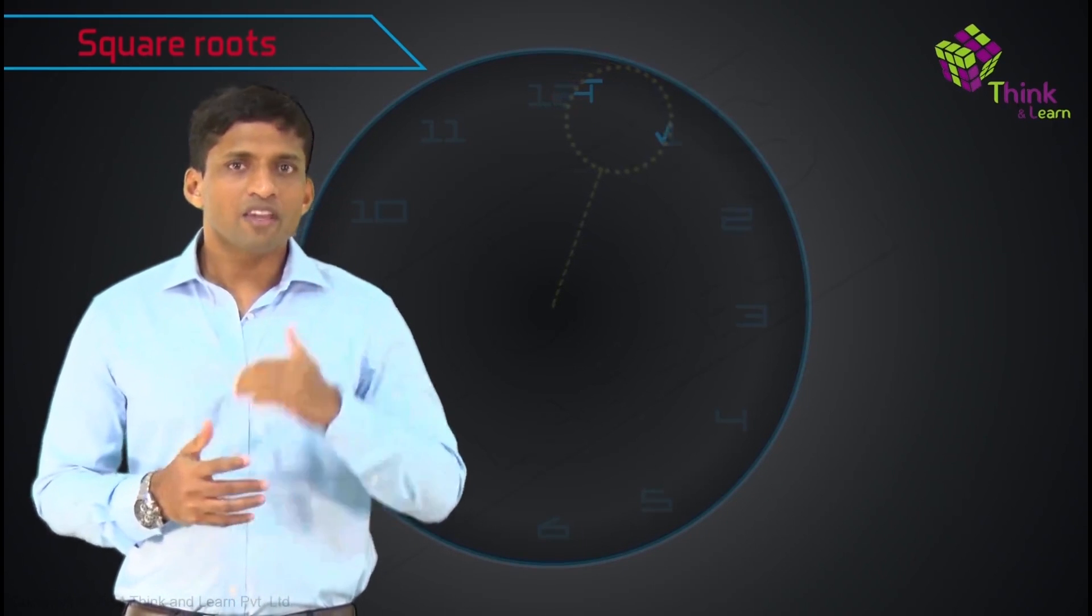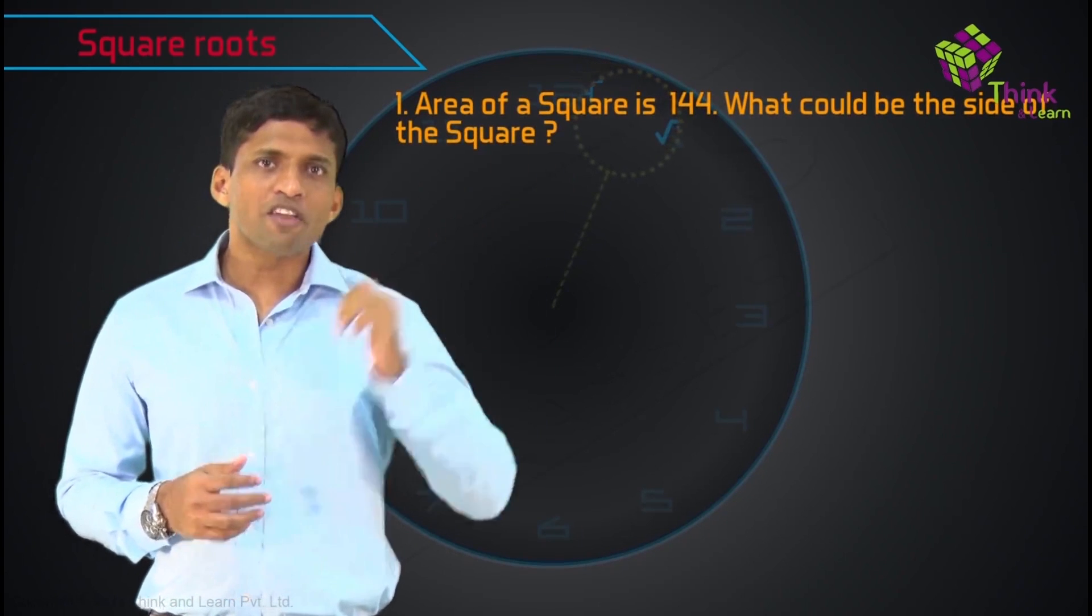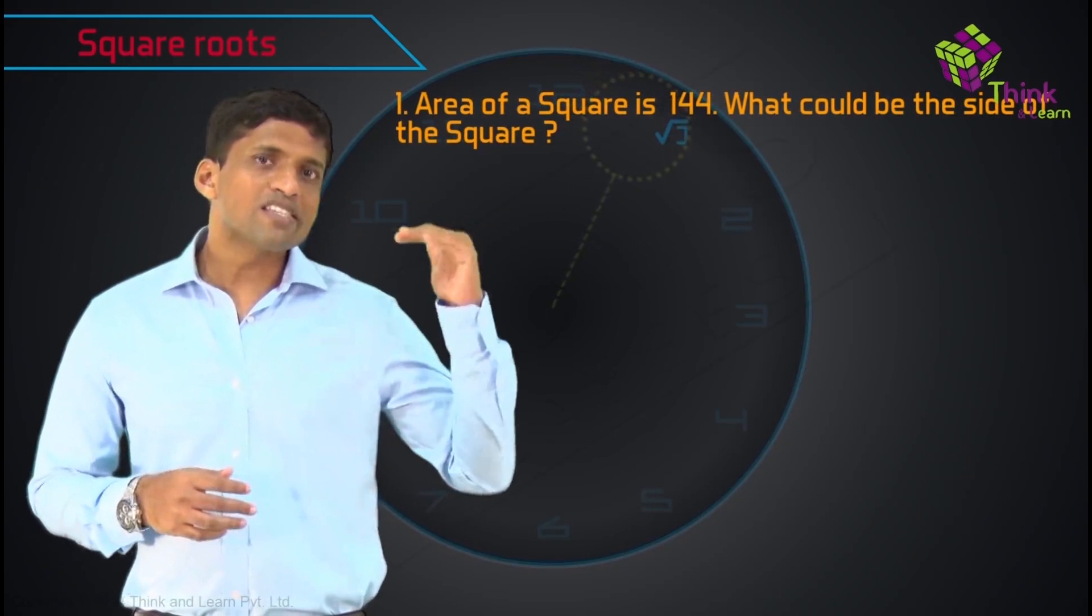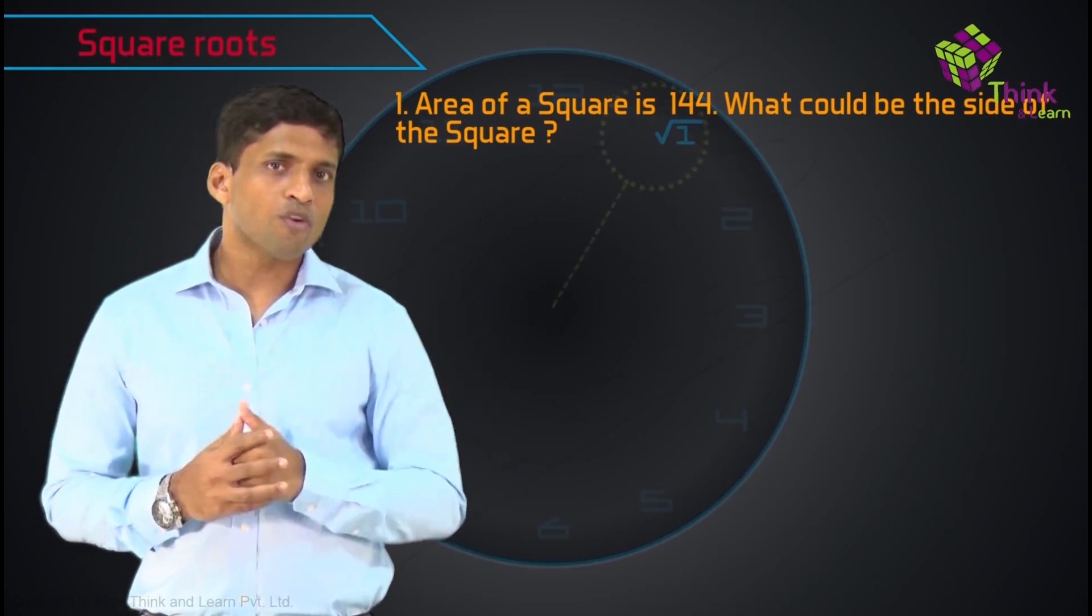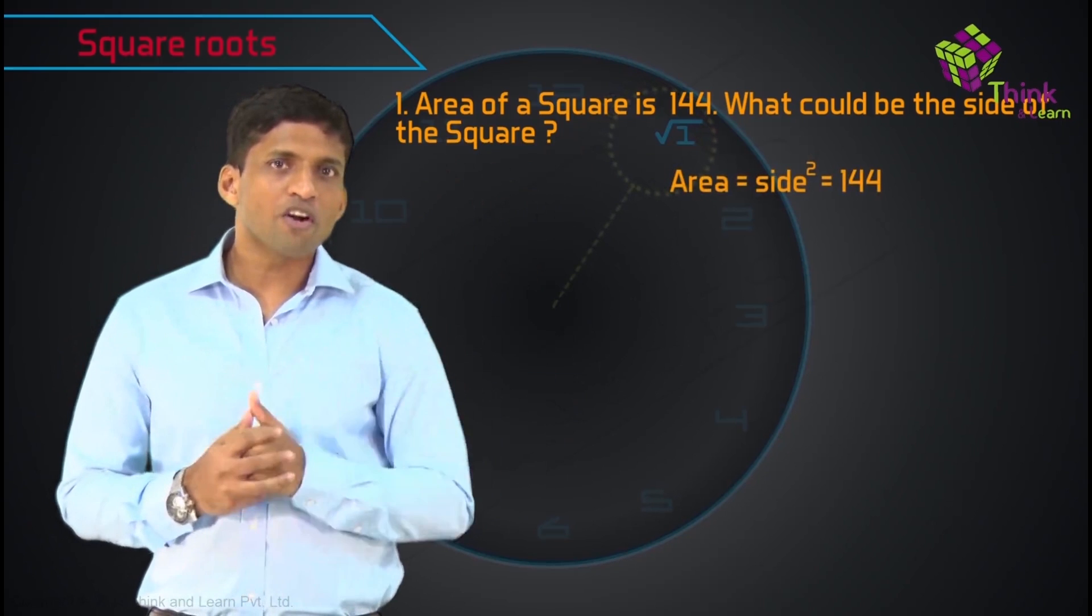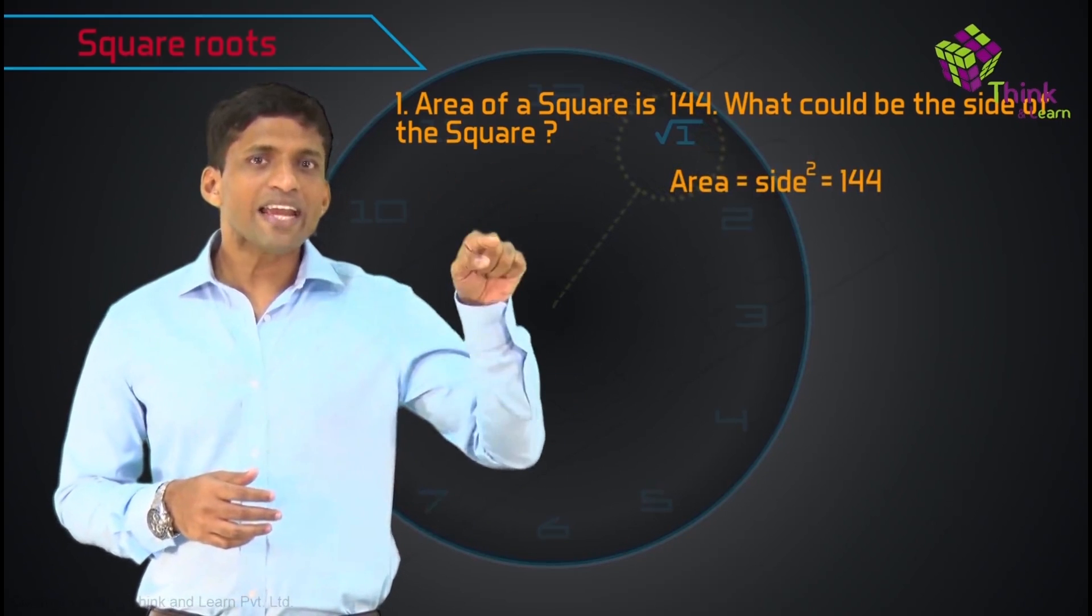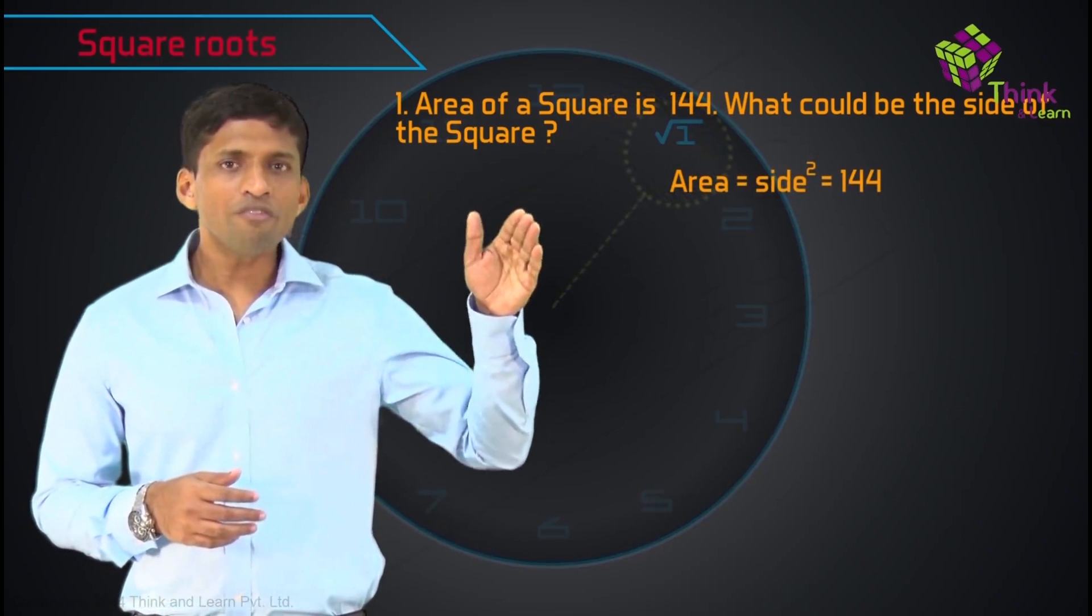Let's look at a scenario. If the area of a square is 144, what could be the side of the square? Side into side is 144, side square is 144.